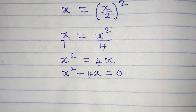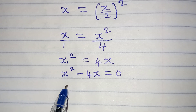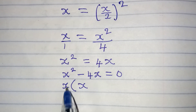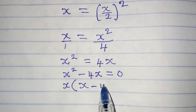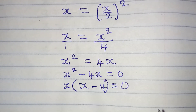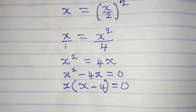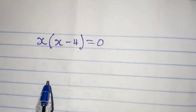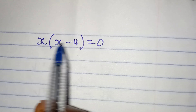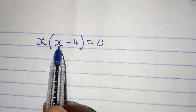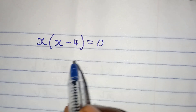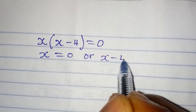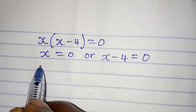Now I apply the factorization method. Since x is a common factor, factoring gives x times (x minus 4) equals 0. Applying the zero product rule, it is either x equals 0, or x minus 4 equals 0.